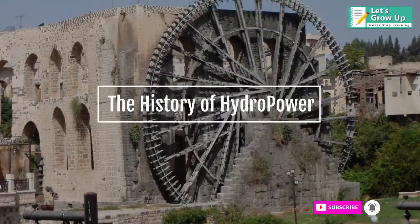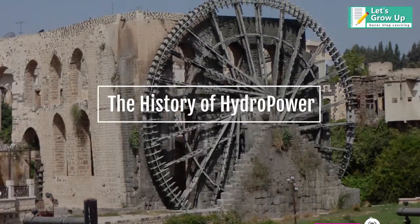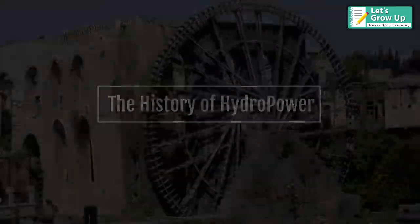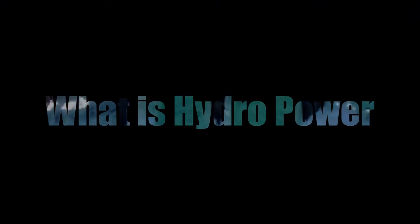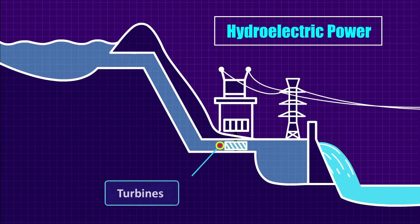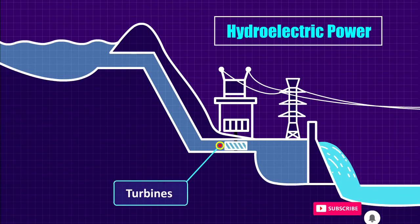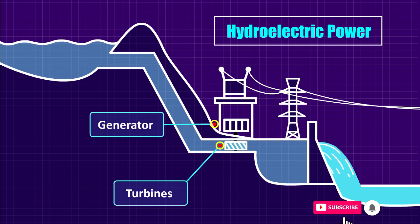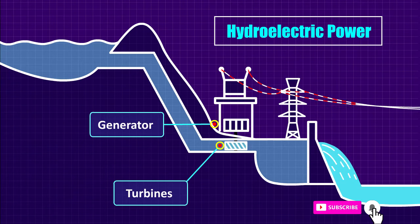Before going into history, we will learn what hydro power is. In modern technology, hydro power moves turbines that pass on their energy to a generator, which then produces electric power. Hydro power is a type of renewable energy.